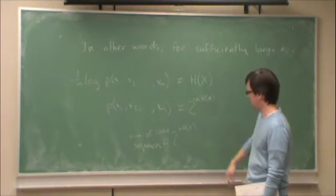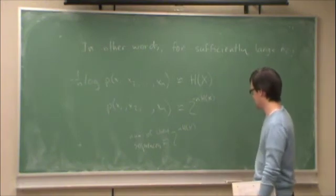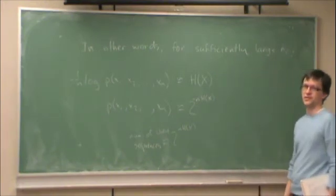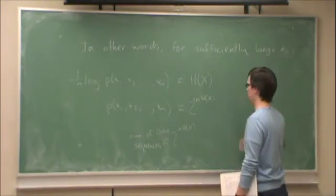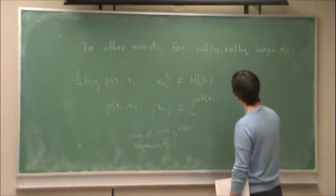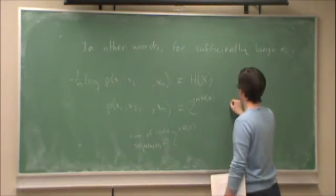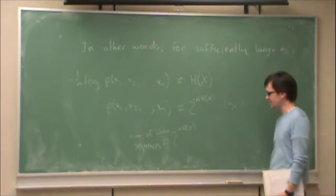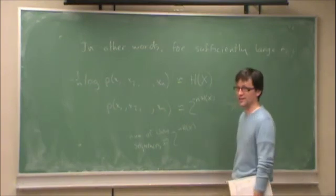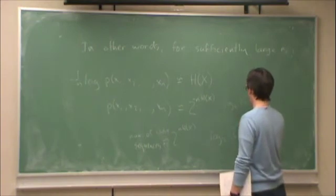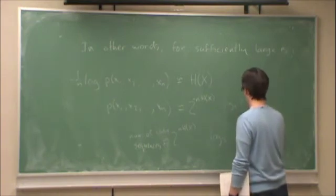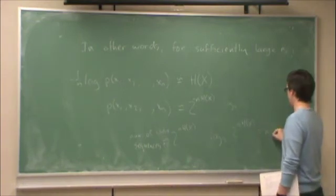So, if that's the number of likely sequences, then how many bits do I need to encode those sequences? So, let's say I have k sequences. The number of bits I need to encode them is log 2k. So here, the number of bits that I need to encode the most likely sequences is log 2 to the n h of x, which is equal to n h of x.